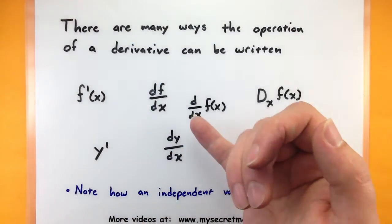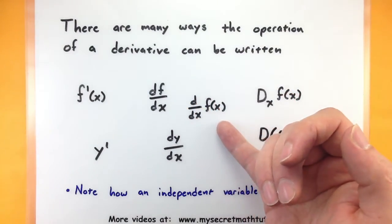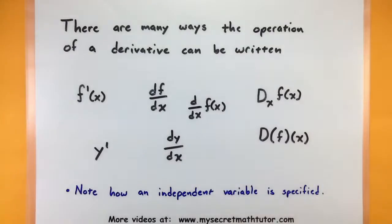Some other ones, this is like Leibniz notation, where you have df over dx, or say d dx f of x. These are all different ways to write a derivative.